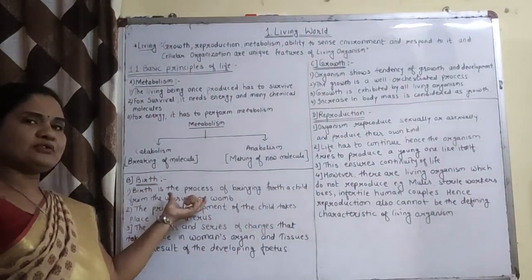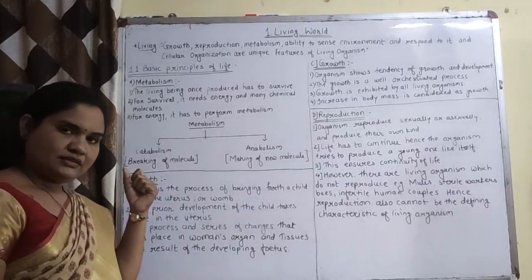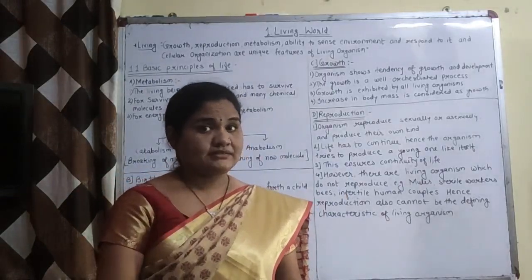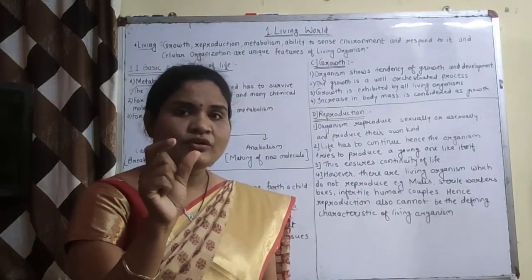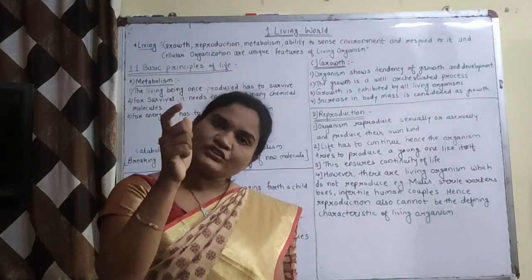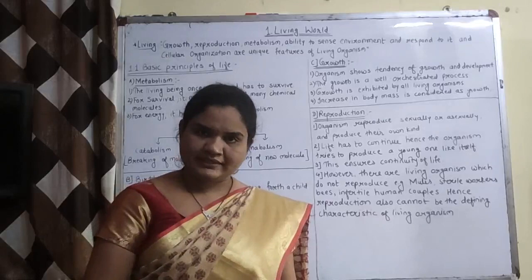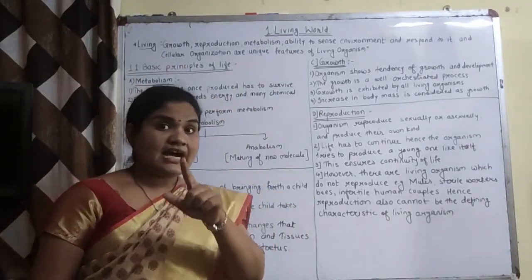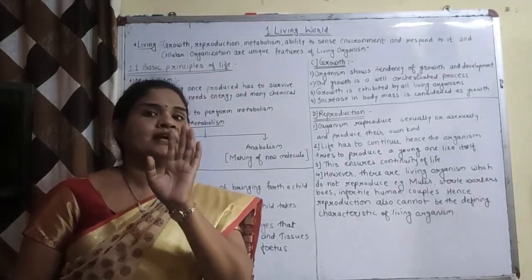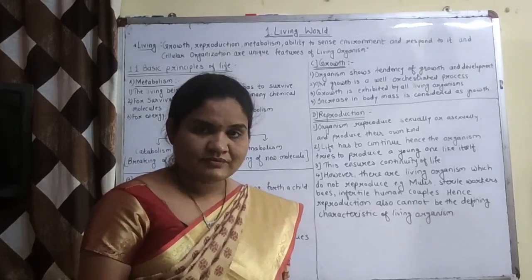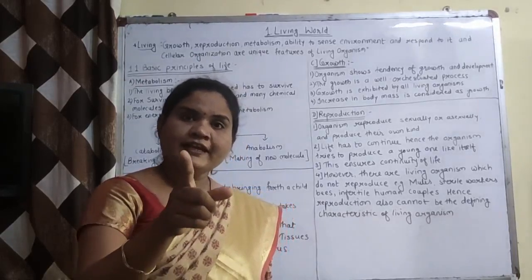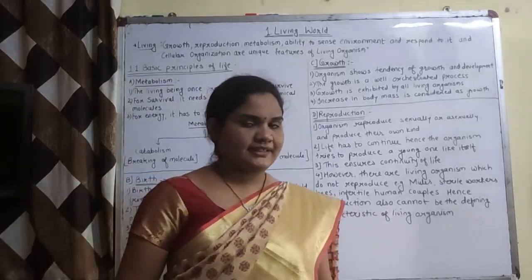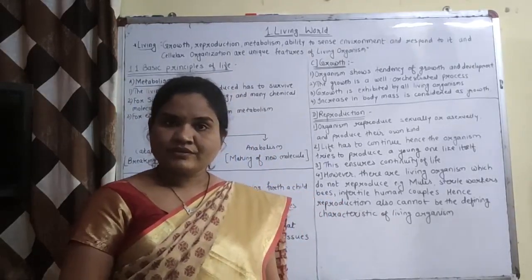Now birth — birth is the process of bringing forth a child from the uterus। इसका मतलब माँ की कोख से जन्म लेना — यह किसी भी animal के लिए लागू होता है। But in case of plants, embryo is present within the seed। अगर आप seed लगाओगे तो वहाँ से new plant निकलेगा। यह characteristic plants के लिए लागू होती है। यह reproduction को represent करता है, because seed is formed after double fertilization।